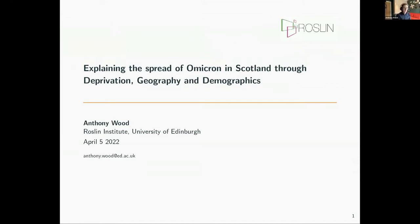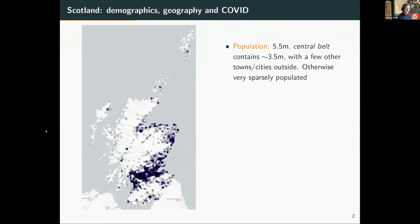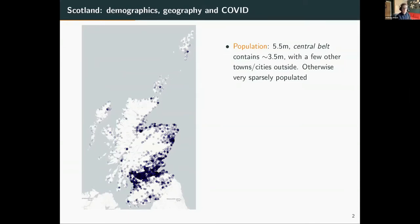We've been doing modeling and simulations in Scotland, looking at it at a spatial level. To give a quick overview of Scotland - geographically it is quite different to the rest of the UK. It comprises around one tenth of the UK in terms of population. Of that population of five and a half million, three and a half million or so is concentrated in the central belt, comprising Edinburgh, Glasgow (which is the largest city), Falkirk, and a few other smaller cities. Outside of that you've got Aberdeen and Inverness, but otherwise Scotland is very sparsely populated.